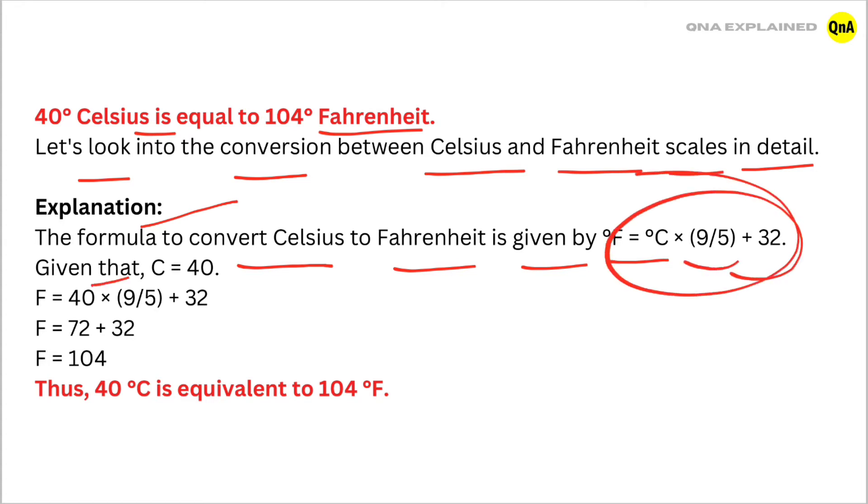Given that C = 40, F = 40 × (9/5) + 32. F = 72 + 32, so F = 104.